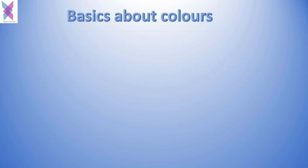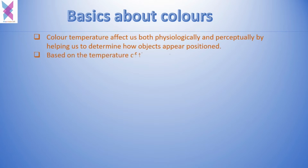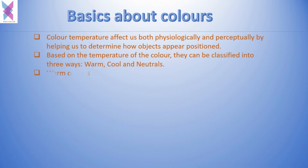Color temperature affects us both psychologically and perceptually by helping us to determine how objects appear. Based on the temperature of the color, they can be classified into three ways: warm, cool, and neutrals. Warm colors are red, orange, and yellow. They attract our eyes quickly and warm colors appear closer to the observer.